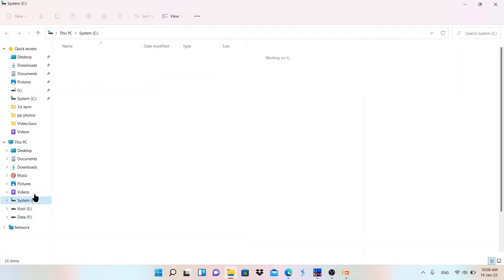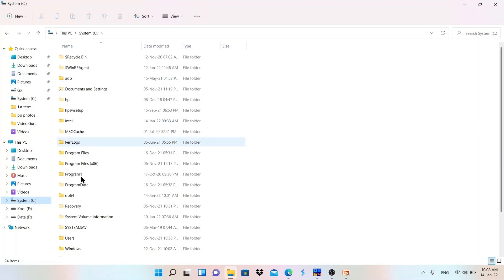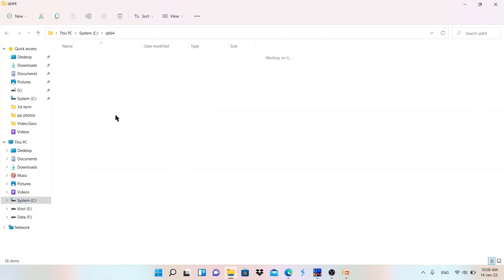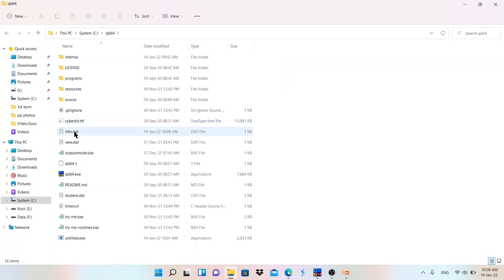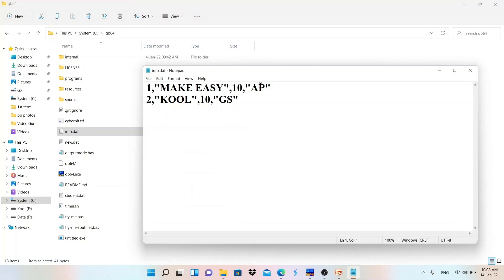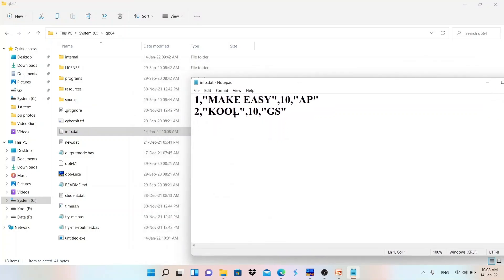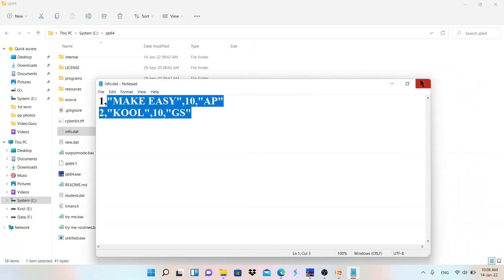If that is created and has data, then our debugging program is correct. So let me check. Yeah, info.dat is here. It is created. As you can see, time just now it is created and all the data which I have entered is here. So we have completed successfully.